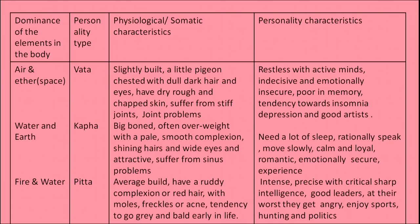When a person has the combination of air and ether, the personality type is Vata. They have characteristics like slightly built, a little pigeon-chested, with dull dark hair and eyes, dry, rough and chapped skin, suffer from stiff joints and joint problems. They are very restless with active minds, indecisive and emotionally insecure, poor in memory, tendency towards insomnia and depression, but can be good artists.